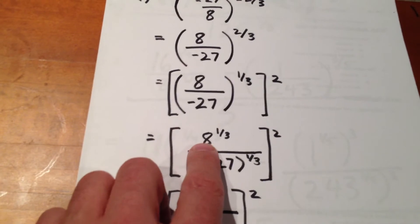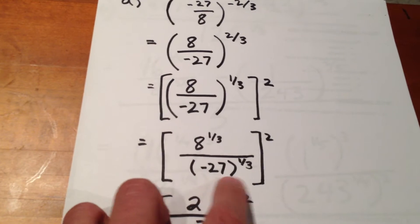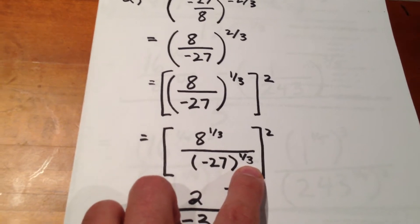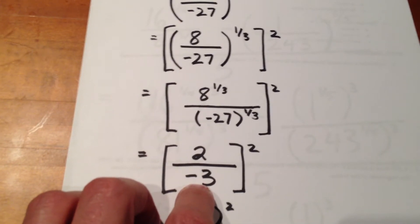So, we recognize that we want to determine the third root of 8 and the third root of negative 27. The third root of 8 is 2, and the third root of negative 27 is negative 3.